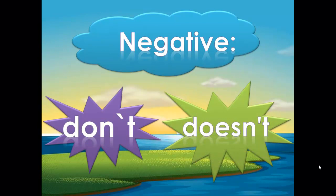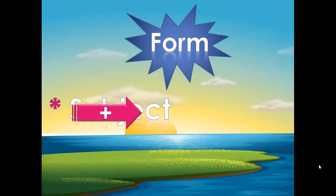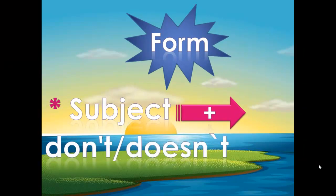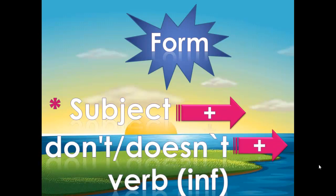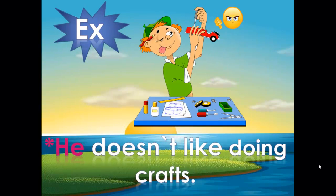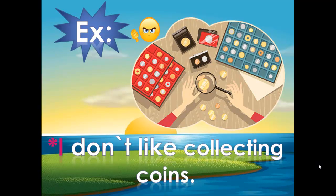To make a negative sentence, we can use don't or doesn't. The form is: subject plus don't or doesn't plus verb in infinitive form. For example, 'he doesn't like doing crafts' — we remove the s from 'like.' Another example: 'I don't like collecting coins.'